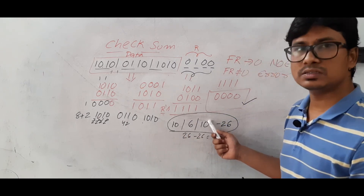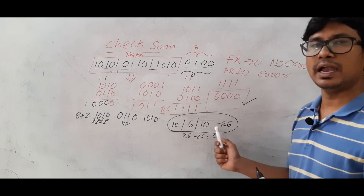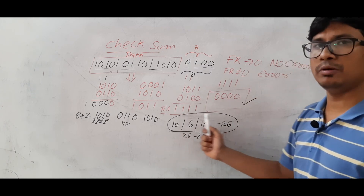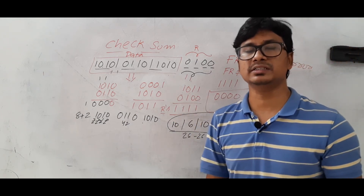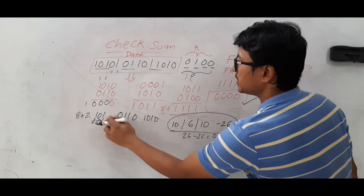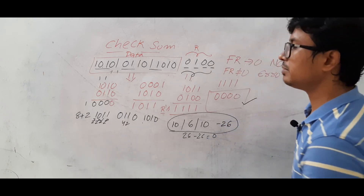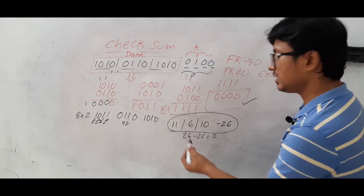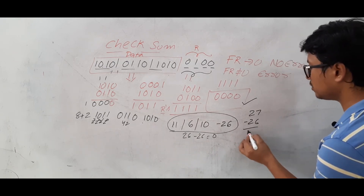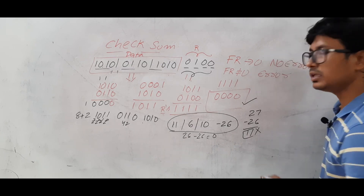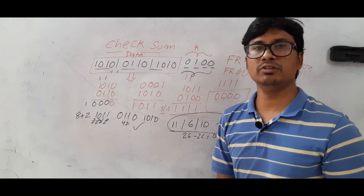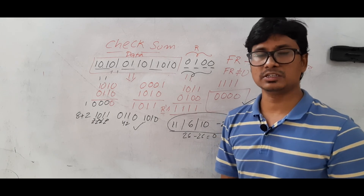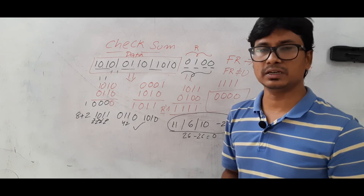So the sender performs the addition of all blocks, finds the negative (ones complement) of the sum, and sends that as the redundant bits. If a bit is modified during transmission — for example 1010 becomes 1011 — that block becomes 11 in decimal. Then 11 plus 6 plus 10 minus 26 equals 1, which is not zero, indicating an error. The receiver will then reject the packet and ask the sender to retransmit.